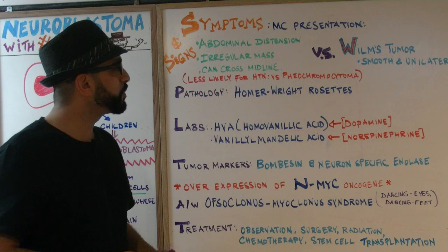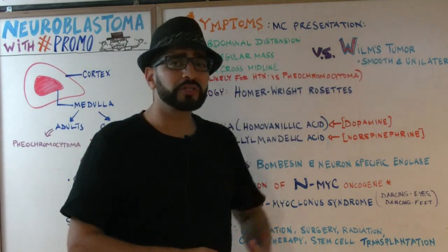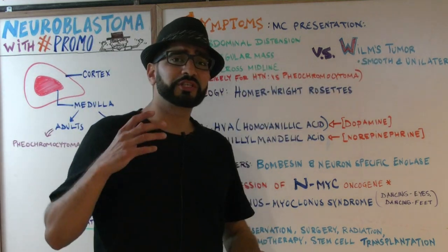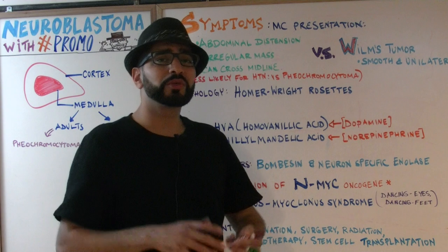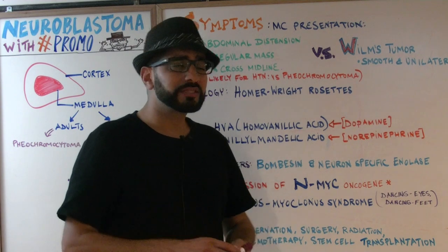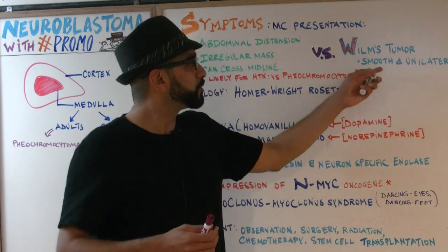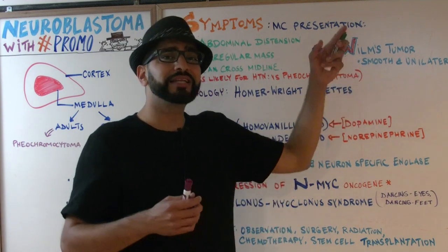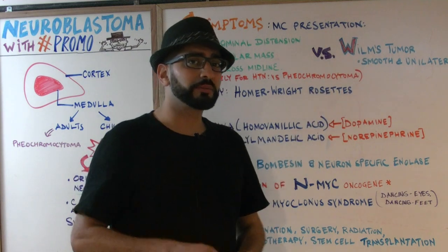An important comparison is with Wilms tumor, which we'll cover in the genetics lecture. Unlike neuroblastoma, when you do the physical exam for Wilms tumor, the mass is going to be more smooth and it's going to be unilateral. Keep that distinction in mind.